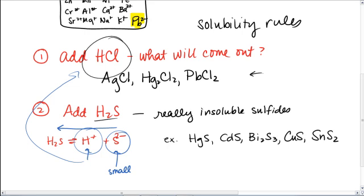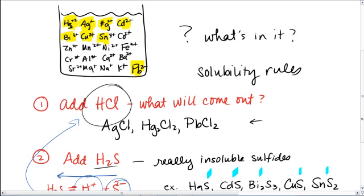Now, within this group, would we know which is which? No, not without further testing. And we're not going to deal with the further testing here. But we could at least identify that, hey, it's got mercury or cadmium or bismuth or copper-2 or tin. And again, you guys, we would never have that many things in solution.